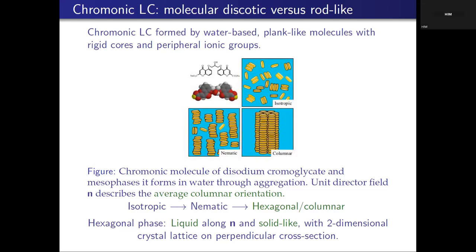From now on, the director tends to be parallel to this columnar group. For many purposes, a columnar group can be thought of as representing a kind of rod-like molecule of traditional liquid crystals. What is really special about the hexagonal phase is that it is liquid in the long direction — along the columns — however, in the perpendicular direction it becomes like a two-dimensional crystal. So you have a two-dimensional solid perpendicular to the liquid columnar direction.